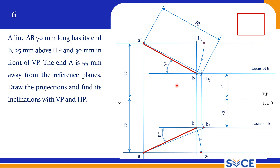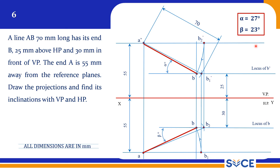This is alpha and this is beta. The projector connecting B-dash and B lies on the same straight line. Alpha I am getting is 27 degrees. The problem says draw the projections and find inclinations with HP and VP — so alpha and beta are the answers. Alpha is 27 degrees and beta is 23 degrees. Please cross-check your answer. We stop here and will see a few more problems in the next session. Thank you.